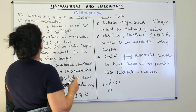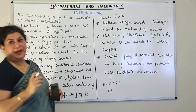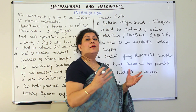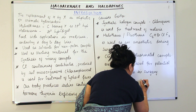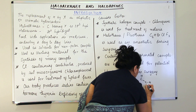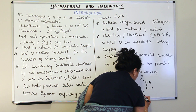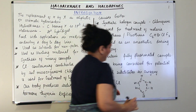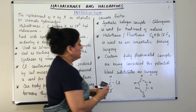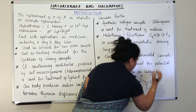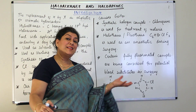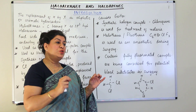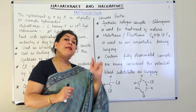Haloarenes, on the other hand, are formed when you replace H by X — where X is a halogen atom — in an aliphatic or aromatic hydrocarbon. Let's take an aromatic hydrocarbon: benzene, the simplest one. The benzene structure has alternating single and double bonds between CH groups in a ring. So if one of the hydrogens in benzene is replaced by a halogen, it becomes chlorobenzene.